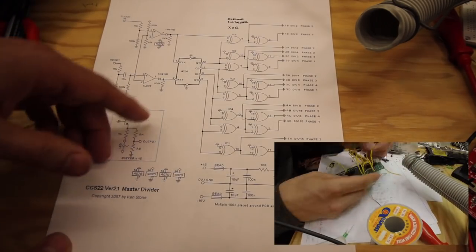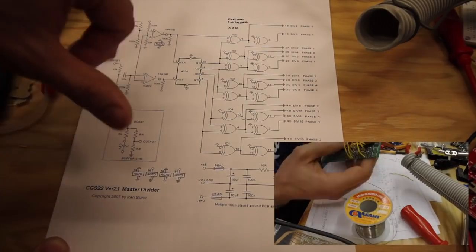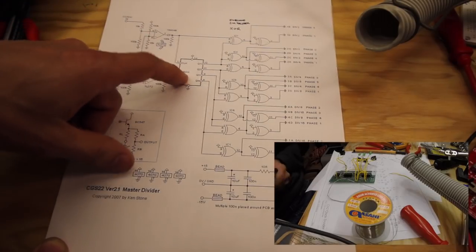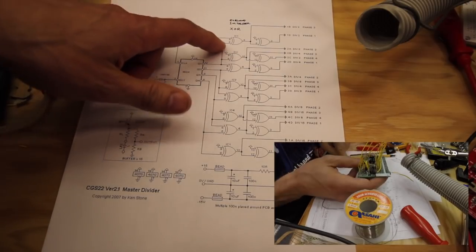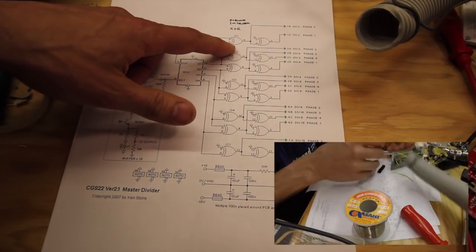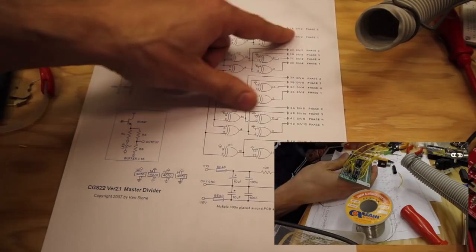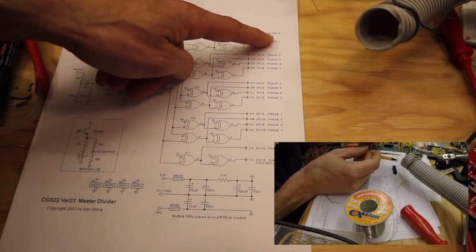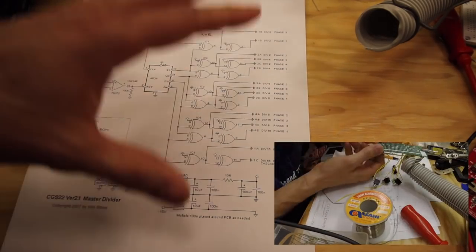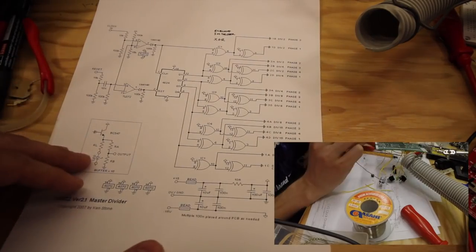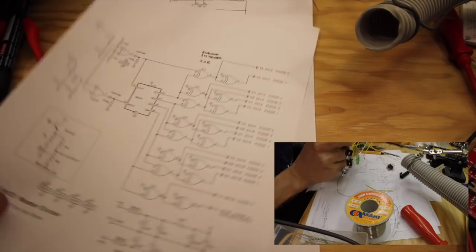And then comes the really complex one by Ken Stone, the CGS22. And this one has a 4024. And then it has loads of 4070s XOR exclusive ORs. So it's either one or the other, exclusively one or the other. And loads of those that makes divisions in four phases, four divisions in four phases. A beast looks like, but also looks very interesting. And might have to think of making one of these as well.